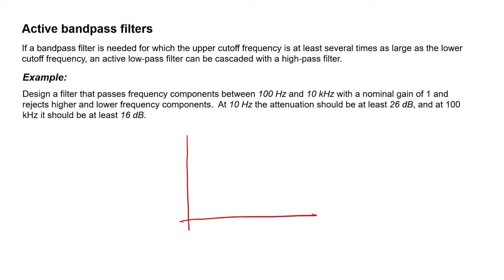Let's plot the transfer function versus the frequency for this filter. So we're told that the bandpass filter should pass frequencies between 100 Hz and 10 kHz. And the DC gain should be 1. Now if I plot this on a log scale, then I need to use decibels, so 1 corresponds to 0 dB.